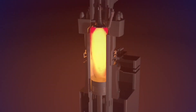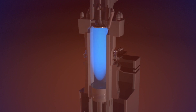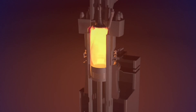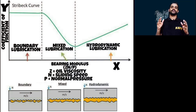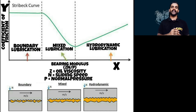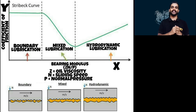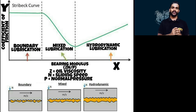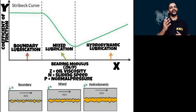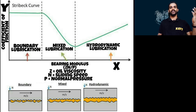The speed of the piston is not constant. The speed of the piston will be zero at top dead center and zero at bottom dead center, while the speed of the piston at mid-stroke will be highest. From this graph, we can understand that as the sliding speed N keeps on increasing, the bearing modulus will also increase, and as the bearing modulus increases, the coefficient of friction in the y-axis will reduce, because bearing modulus and coefficient of friction are indirectly proportional, while bearing modulus and sliding speed N are directly proportional.